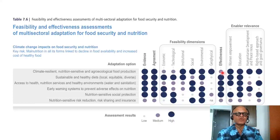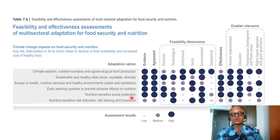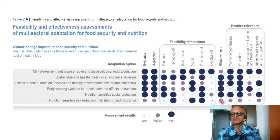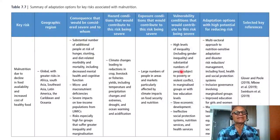Effectiveness is medium only for climate-resilient, nutrition-sensitive, and agroecological food production, and for nutrition-sensitive social protection — which we discussed in terms of welfare. Nutrition-sensitive risk reduction, risk sharing, and insurance also have medium effectiveness.